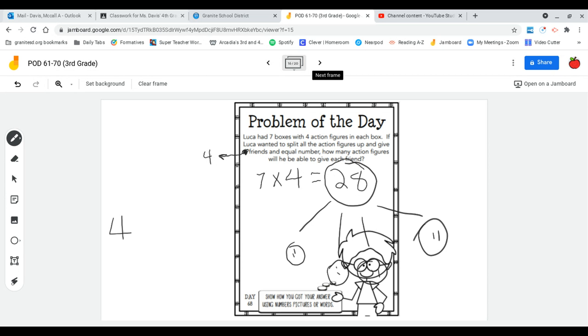I'm going to say four friends are getting action figures times how many action figures each would equal the 28 total. So I'm going to skip count by fours until I get to 28, which will leave me with seven action figures that each friend gets.